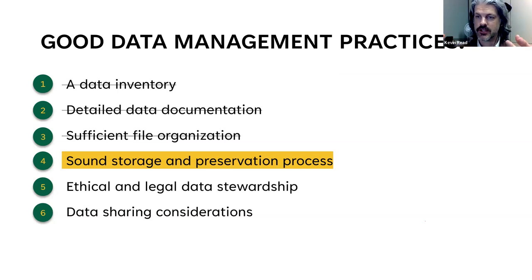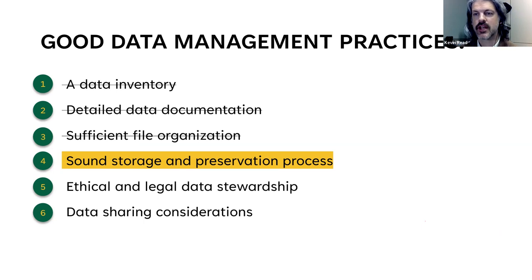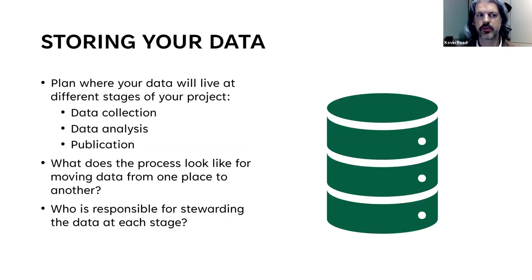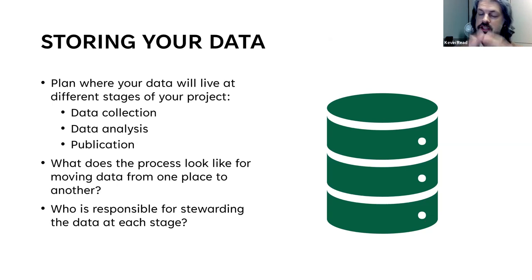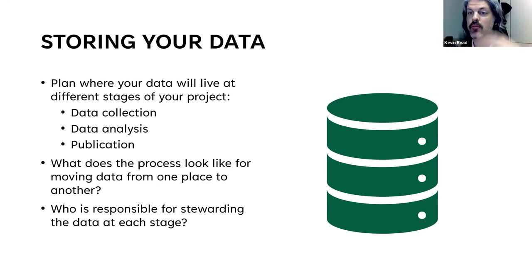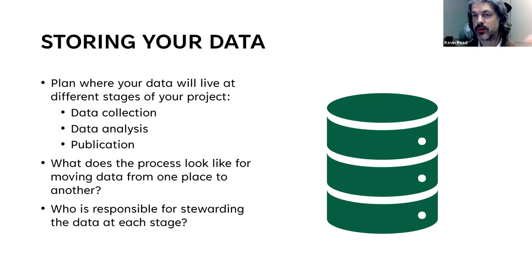Once you have your file naming plan and organization set up, think about how you're going to store and preserve this data. Ideally before you start your project, plan for where your data is going to live at different stages — at collection, analysis, and publication. I've worked with people who collect data in REDCap, then export it to a statistician who stores it on their own drives, then it comes back and goes into OneDrive, then gets published. If you know where your data is at every stage, it's easier to track what's happening in the process.